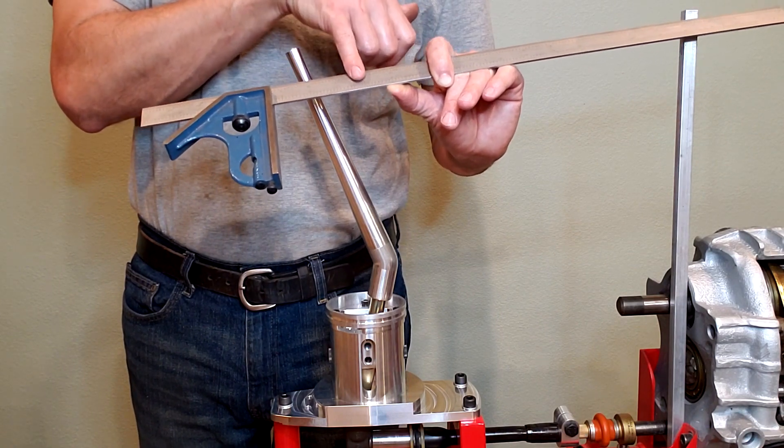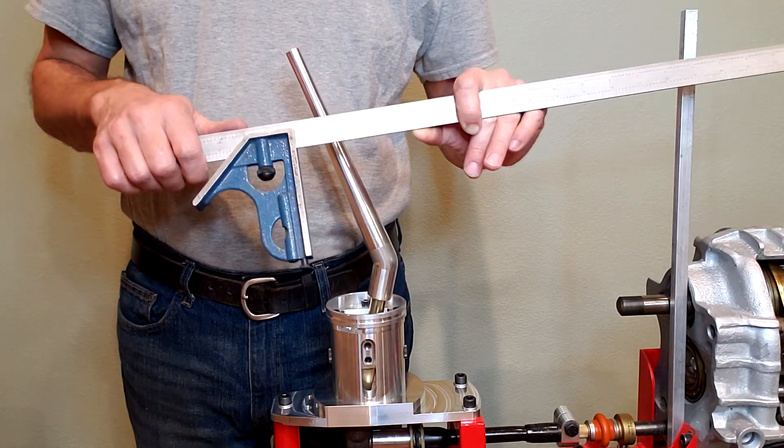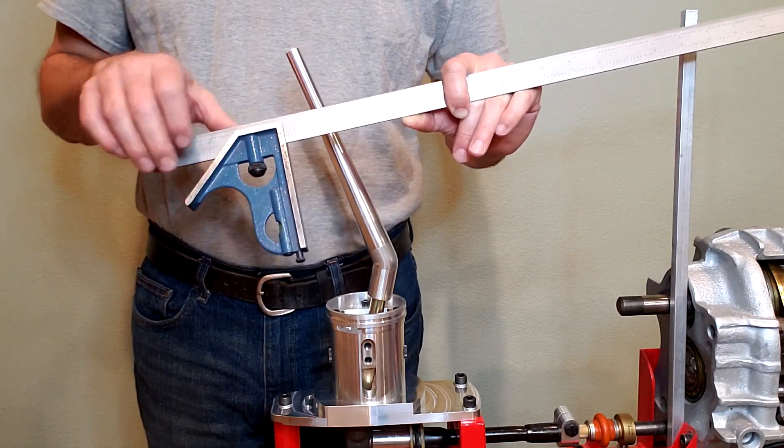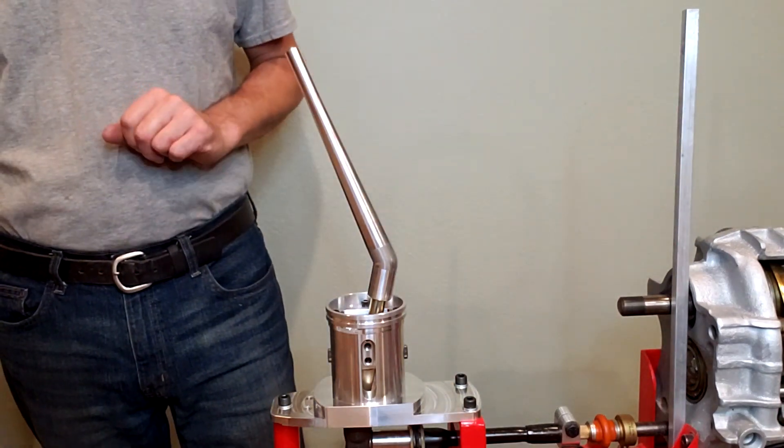And so we've got one, two, three, four inches. Right at four inches of travel for the Renshift 20% long stick.